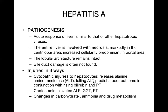Usually ALT remains elevated, but if there is massive necrosis of hepatocytes, it may suddenly fall — this is not a good sign. Another important point is prothrombin time, which is called the prognostic indicator of liver injury. If prothrombin time is prolonged, the prognosis is poor and should always be measured.